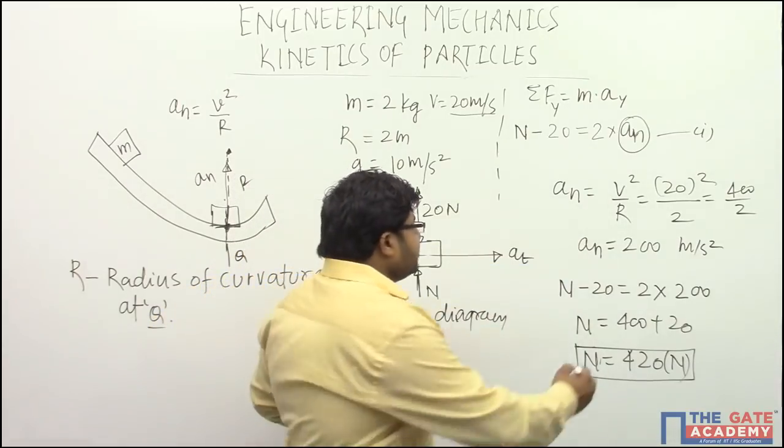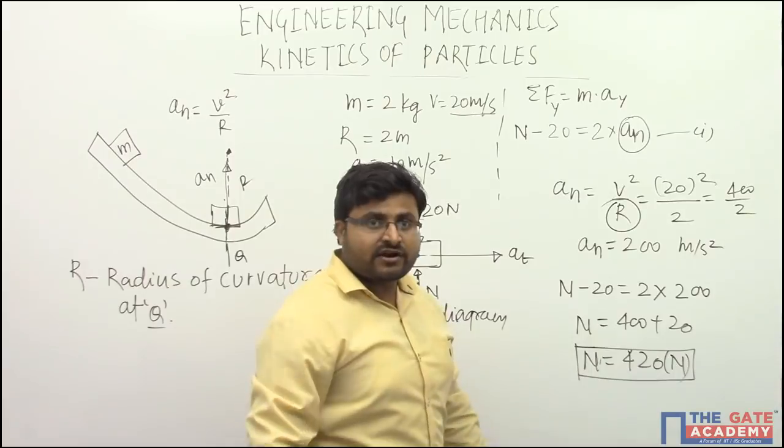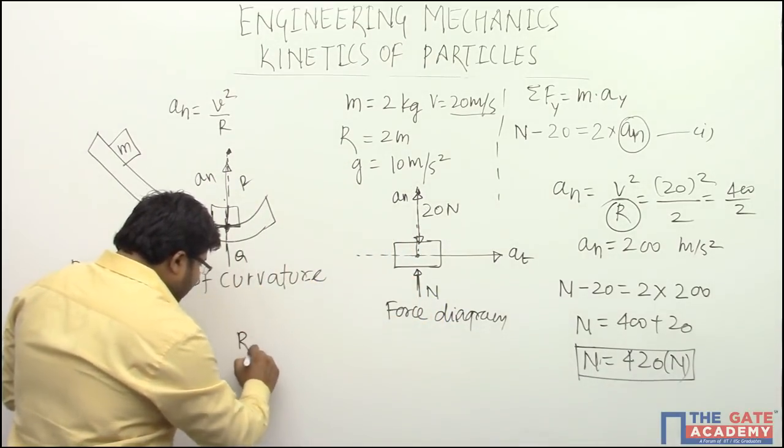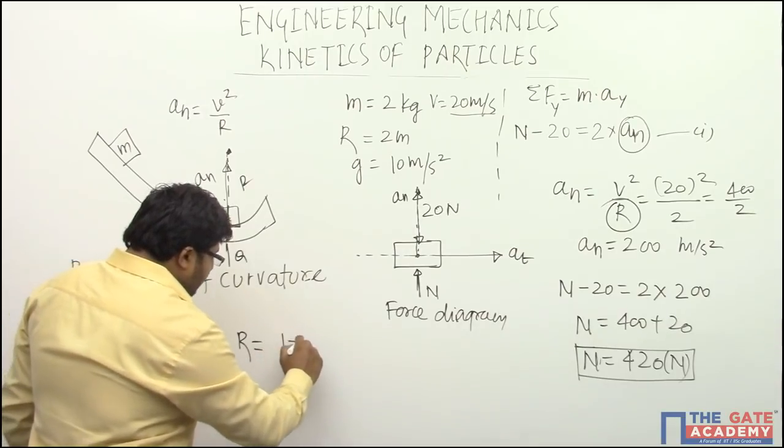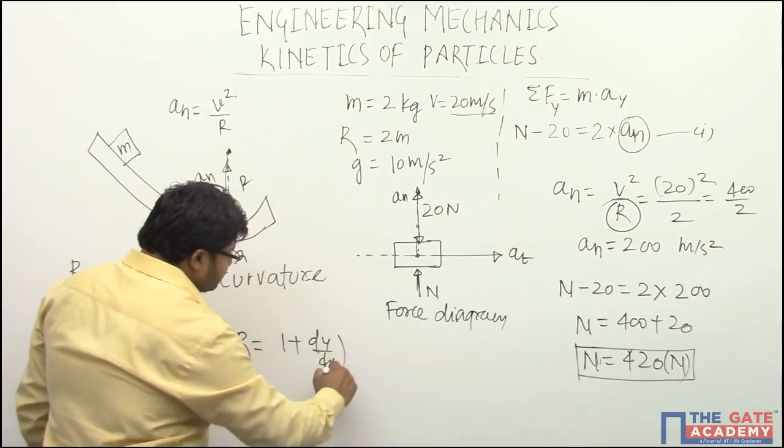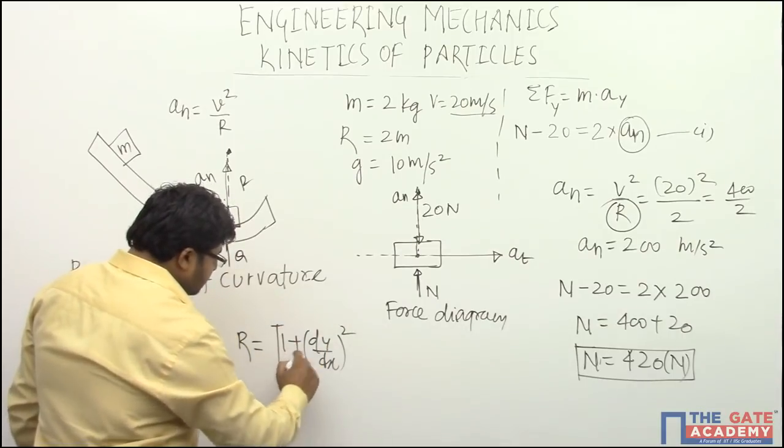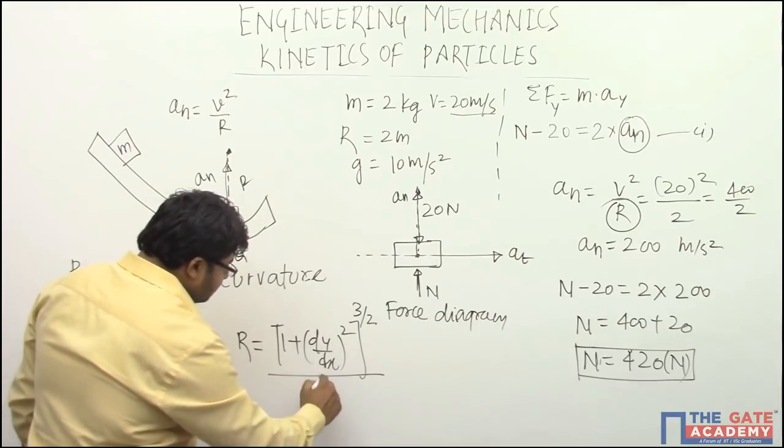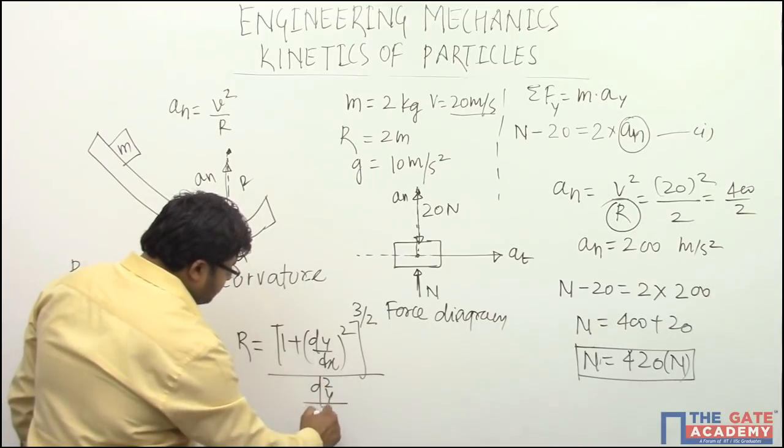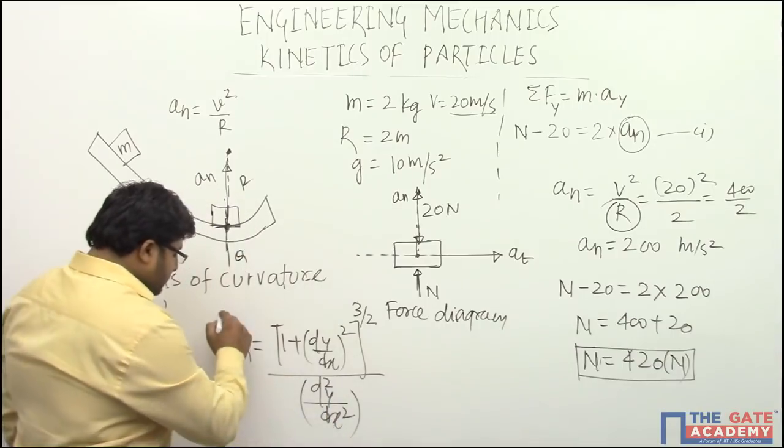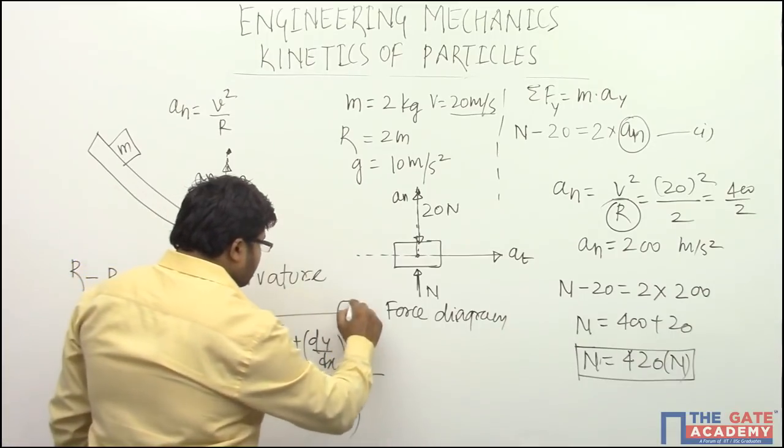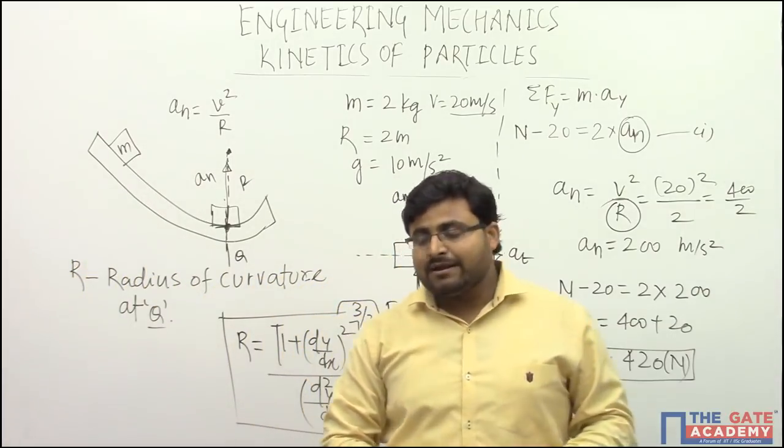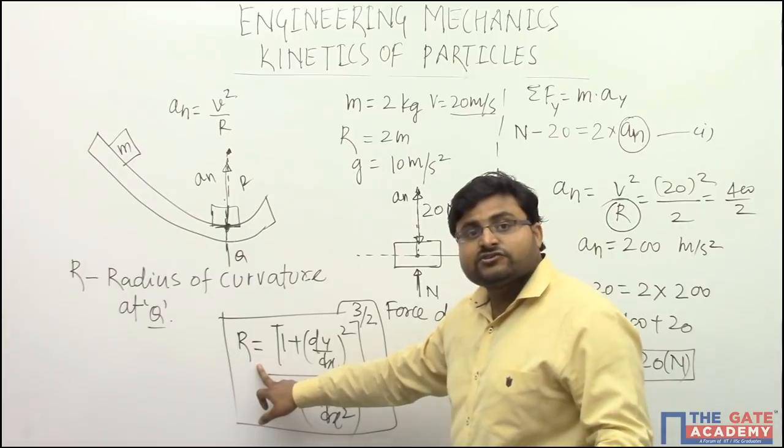But radius of curvature, we have one more expression for radius of curvature that is important. That radius of curvature can be given like this: 1 plus dy by dx square to the power 3 by 2 divided by d2y upon dx square. That is also one expression which can be given in GATE exam for finding radius of curvature.